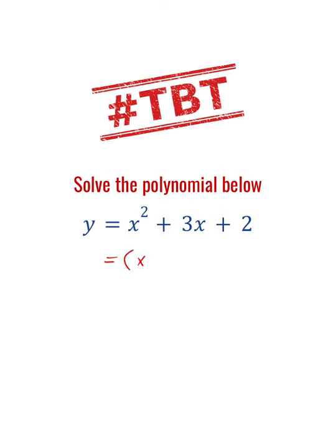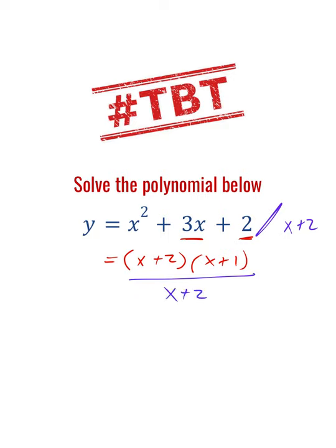Just a reminder: if we're looking for two numbers that multiply to 2 and add to 3, we can rewrite this as x plus 2 times x plus 1. It's factored now. If we had a fraction with this all over x plus 2 as a denominator, now you can see the value in factoring because the x plus 2 is the common factor. So our answer would simply be x plus 1.